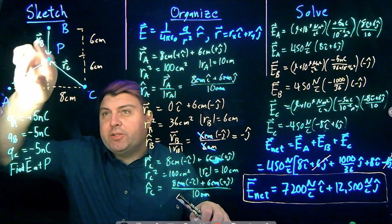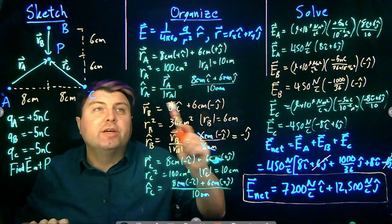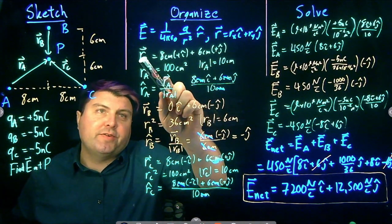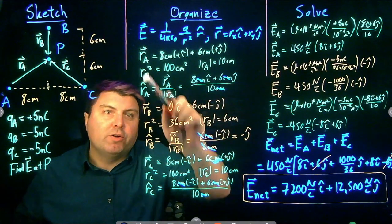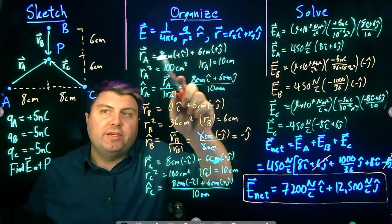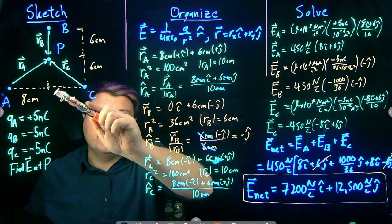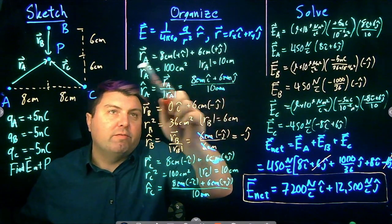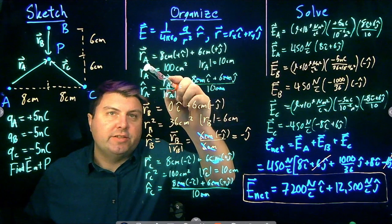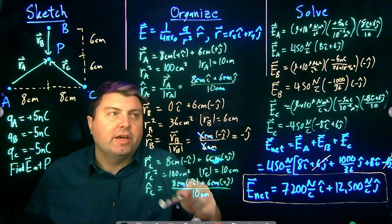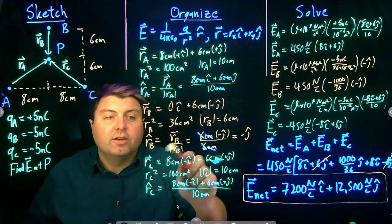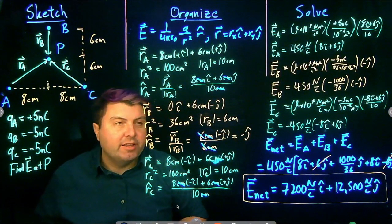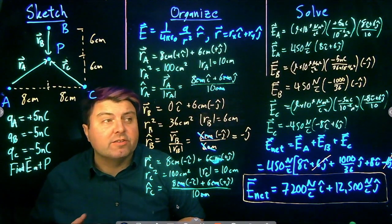Sketching to make sure we understand is very important. The new and challenging step is finding these R vectors. Once we've found them, it's straightforward — just find the x and y components and write them down. From there, finding the squares and the unit vectors is easy. We can't forget the R-hat unit vectors; otherwise we'd be adding scalars, but electric fields add as vectors, not scalars.